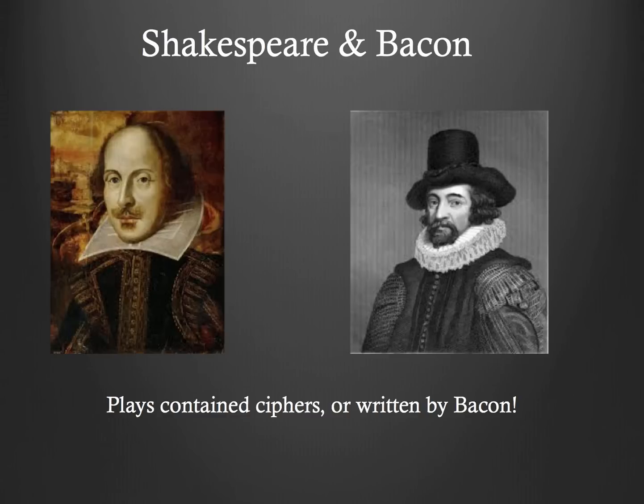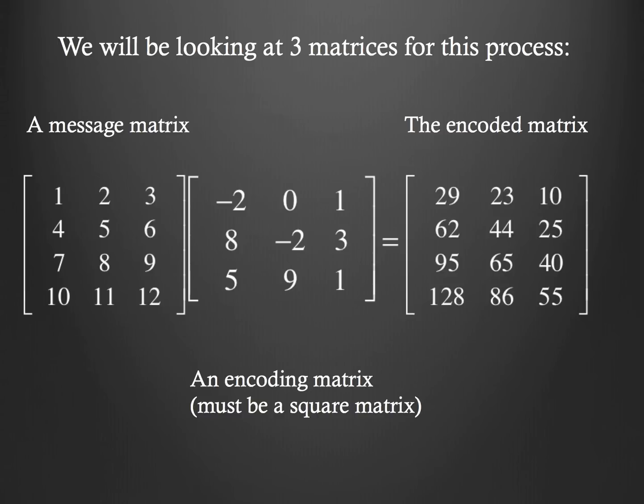So we're going to get into writing matrices, and we're going to be looking at three matrices that we're going to need for this process. You're going to have a message matrix, you're going to need an encoding matrix, and then when you multiply those two things together, you'll get what's called the encoded matrix. That's our secret that we're going to be sending along to somebody else, so that if it got intercepted, nobody would know what it really says, unless they have something. More on that later.